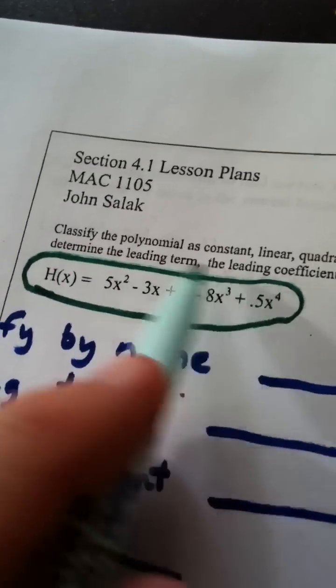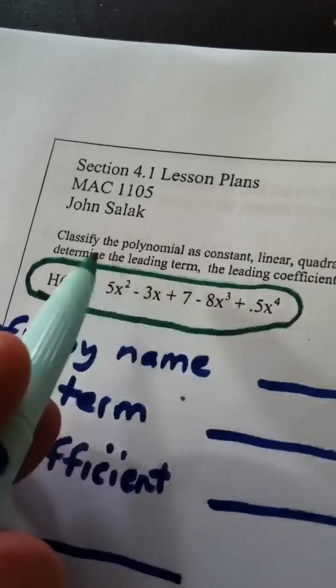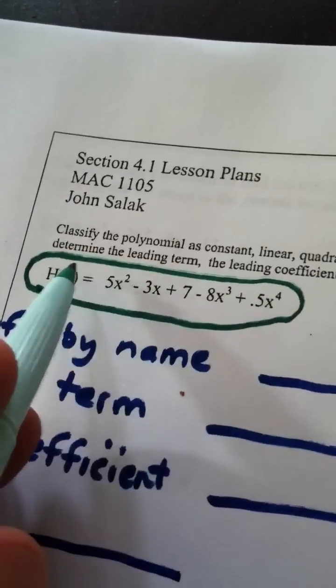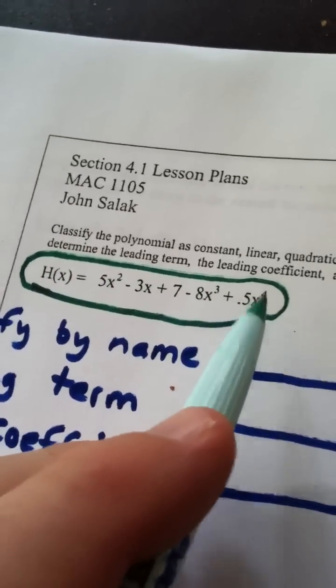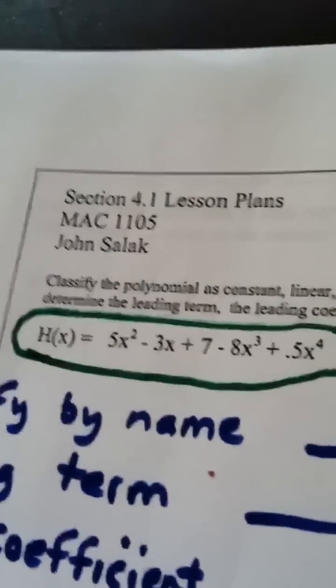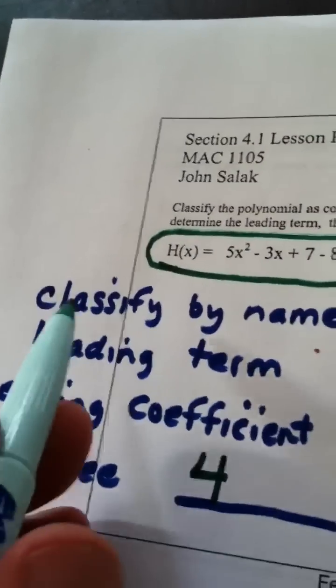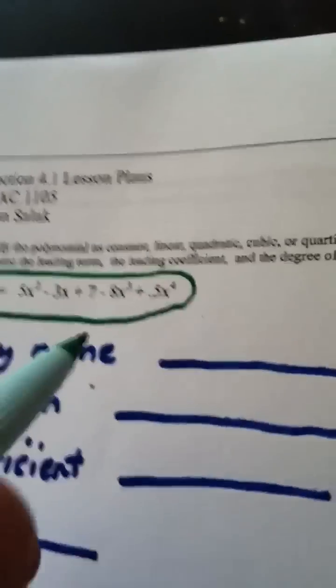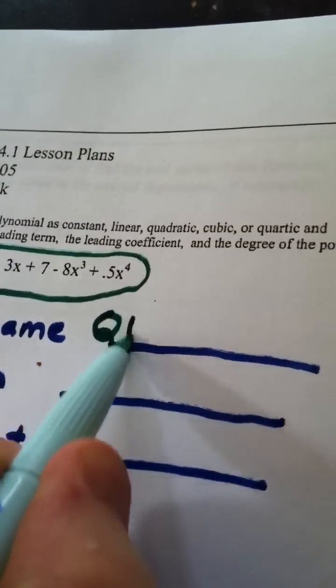Now, remember, the degree of the polynomial is not found by adding these up, it's found by using the highest one. So the degree of this polynomial is degree 4, that's the highest exponent we see, and when you have a fourth degree polynomial, it is referred to as quartic.